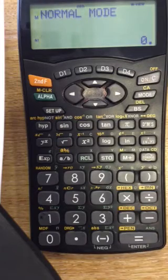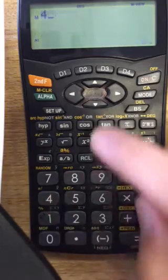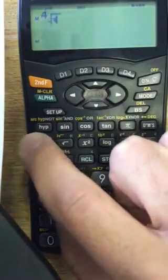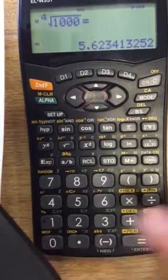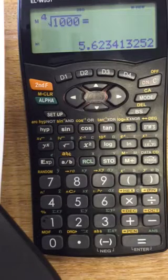If I wanted to find the fourth root of a thousand, for example, I'd press 4, second function, yx, thousand, and that finds me the fourth root of a thousand, which is, as you can see on the screen, 5.62 and so on.